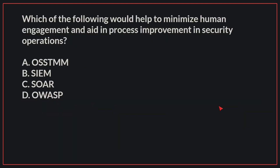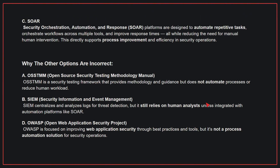Therefore, the correct answer is A. Which of the following would help to minimize human engagement and aid in process improvement in security operations? The correct answer is C. SOAR. SOAR platforms are designed to automate repetitive tasks, orchestrate workflows across multiple tools, and improve response times, all while reducing the need for manual human intervention. This directly supports process improvement and efficiency in security operations.